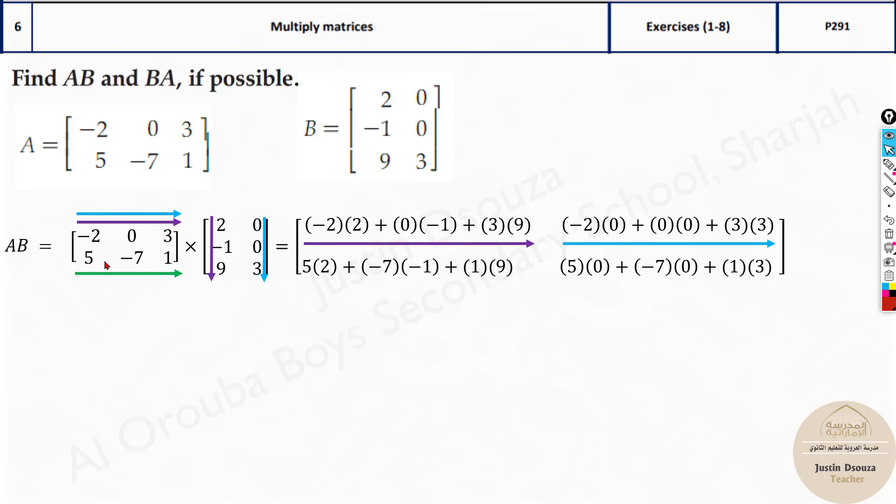And then with the second row first column over here and this one with the second row over here second column over here. You can see the tail with the tail. In the sense 5 times 0, minus 7 times 0, and lastly 1 times 3.